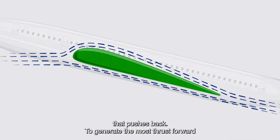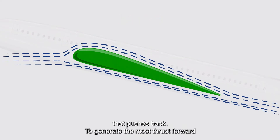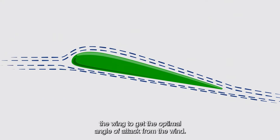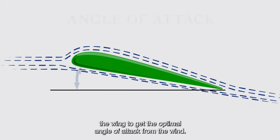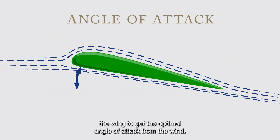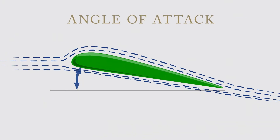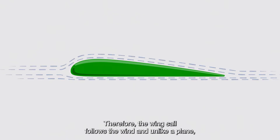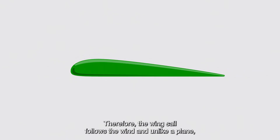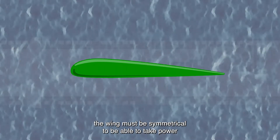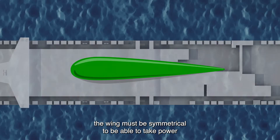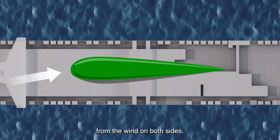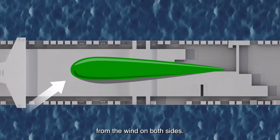To generate the most thrust forward, it is important to position the wing to get the optimal angle of attack from the wind. Therefore, the wingsail follows the wind, and unlike a plane, the wing must be symmetrical to be able to take power from the wind on both sides.